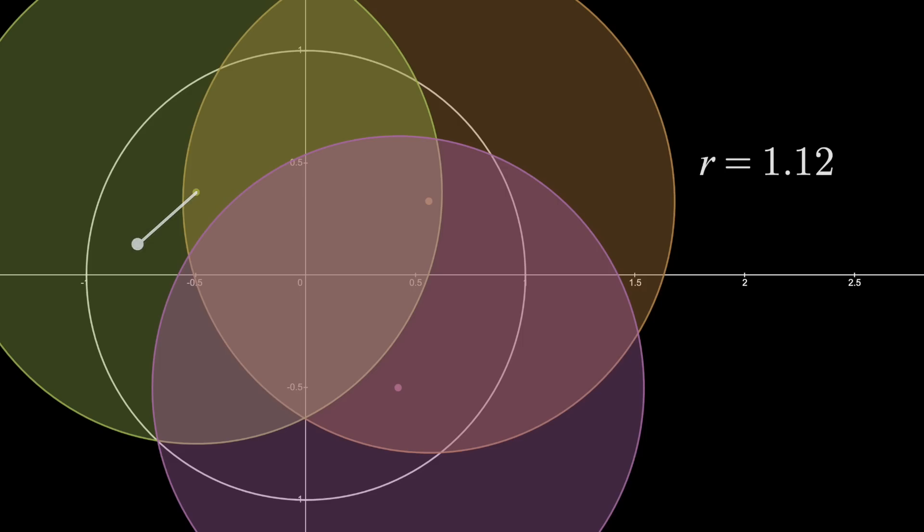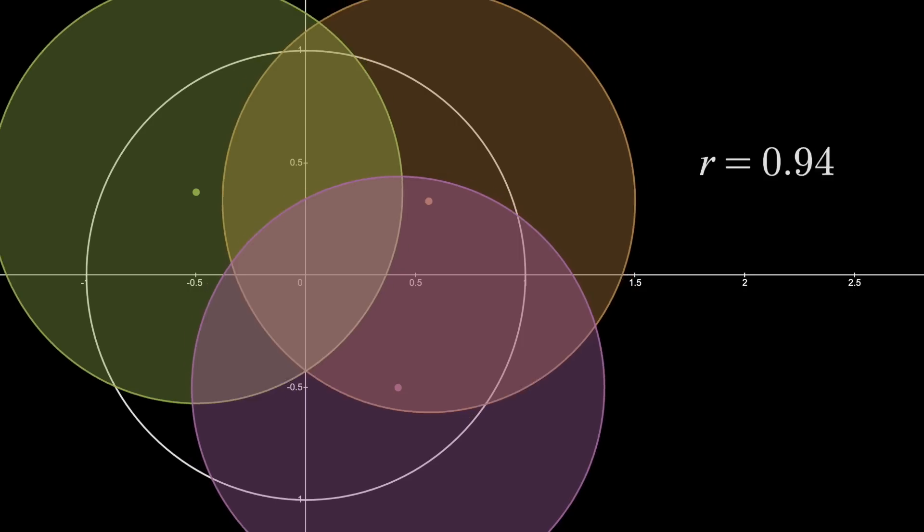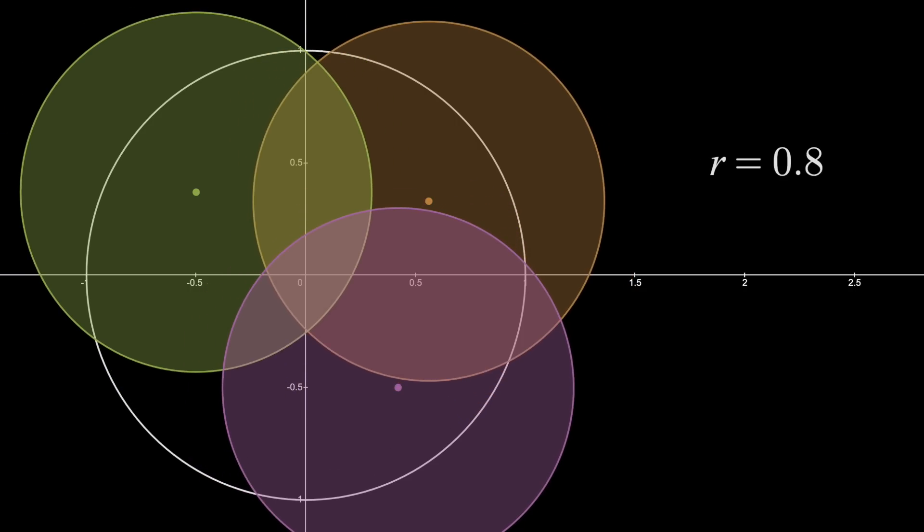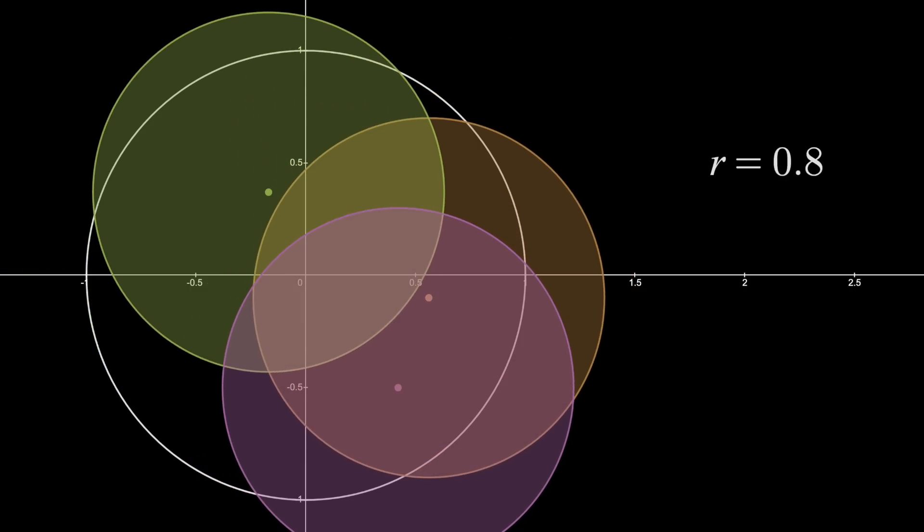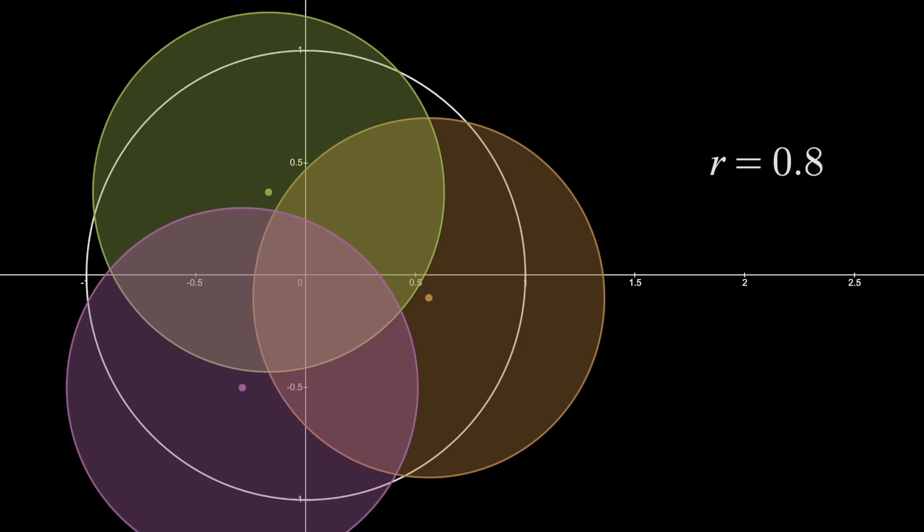So our new question, still sticking to three water fountains, is really, what is the smallest radius R, such that we can cover the entire mall with three disks of that radius? Then wherever those disks are centered, tells us our optimal water fountain locations.